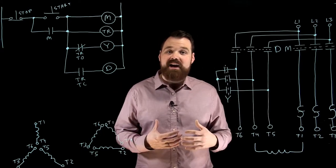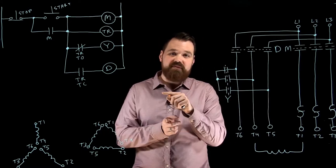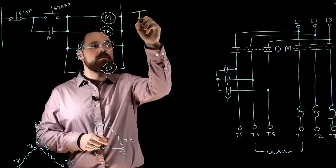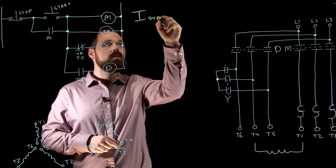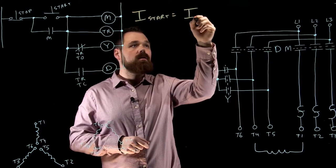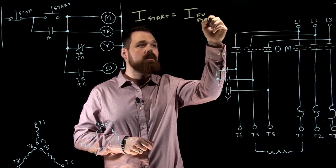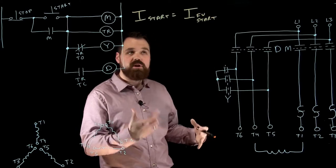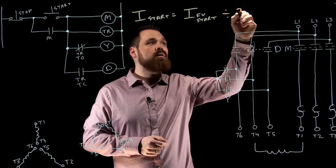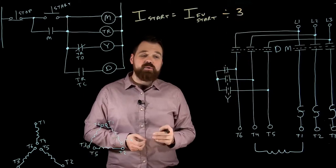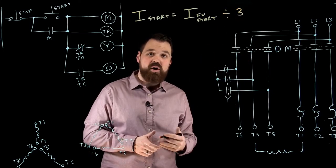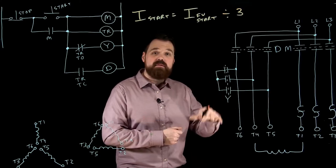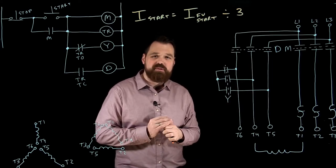The effect this has, because we're reducing the phase voltage, we're not changing the phase impedance. What we see is our current at start is going to be our full voltage start current, which would be if we were to just start this motor in delta, what would our inrush current be, divided by 3. So we actually only see one-third of the starting current, so we only see 33% or one-third of the actual starting current if we were to start it in delta, so we see that huge drop in inrush current, which is great.